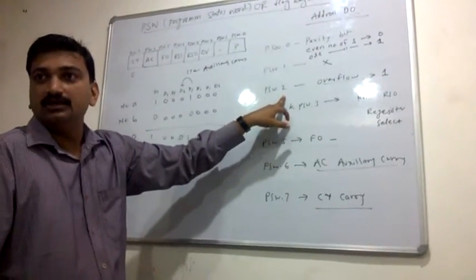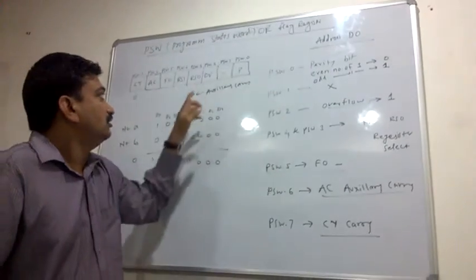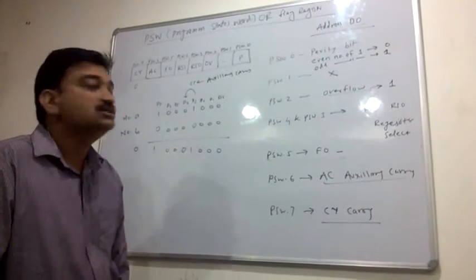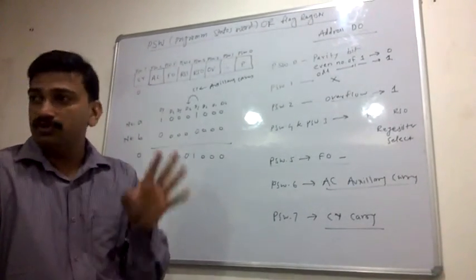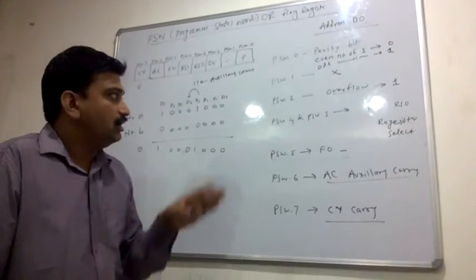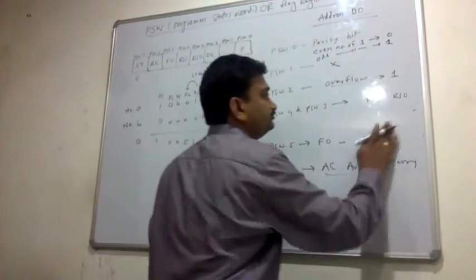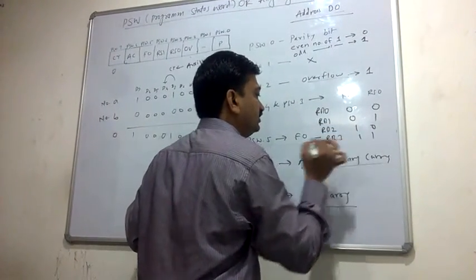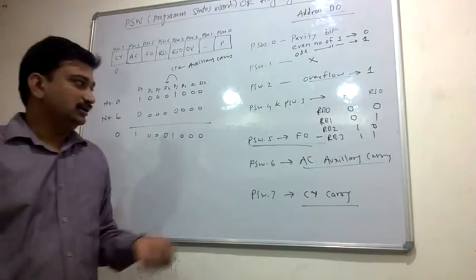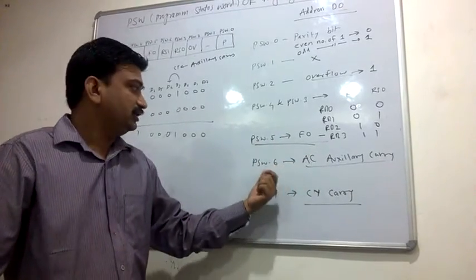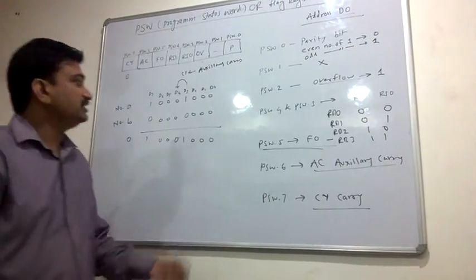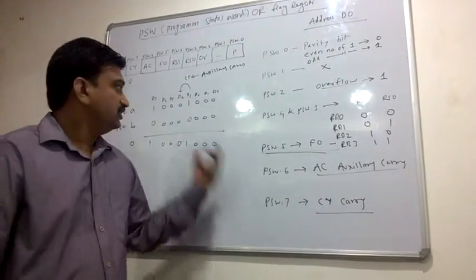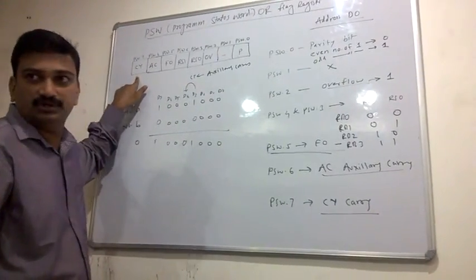To summarize: PSW.0 is the parity bit — even number of ones gives zero, odd number gives one. PSW.2 is the overflow flag — when the result is too large for the accumulator, it becomes one. PSW.3 and PSW.4 are register select bits RS0 and RS1 — 00 for RB0, 01 for RB1, 10 for RB2, 11 for RB3. PSW.5 is F0 (user-defined). PSW.6 is auxiliary carry — carry from lower nibble to upper nibble. PSW.7 is the carry flag — carry from D7.